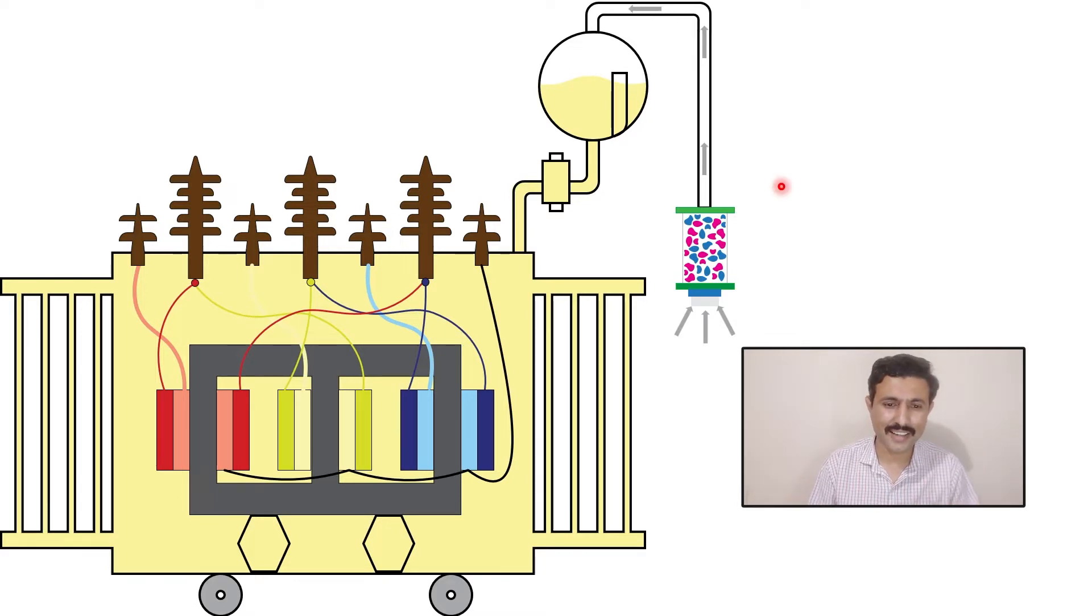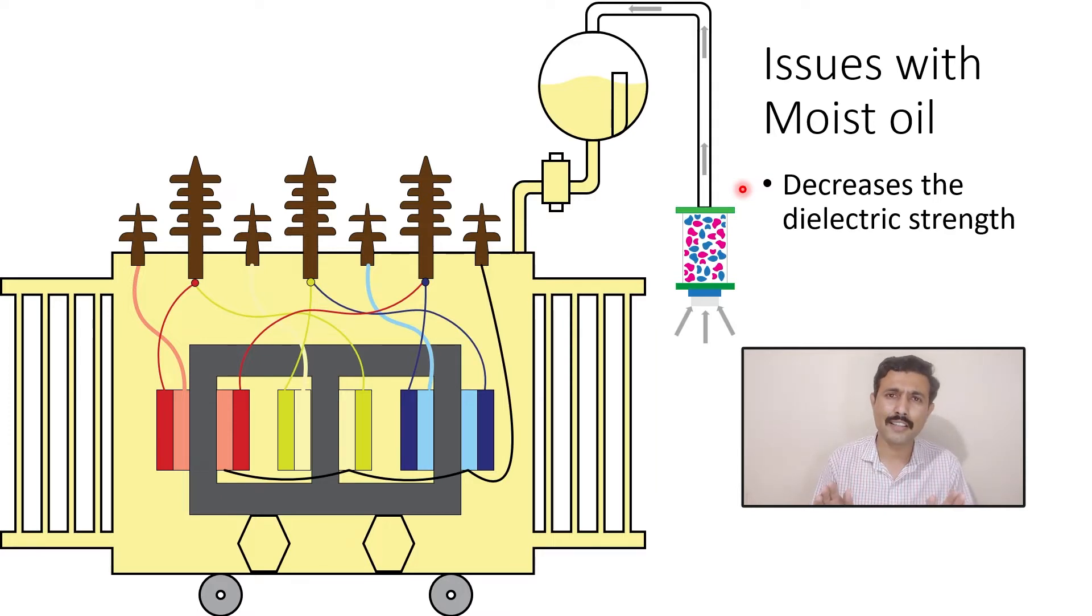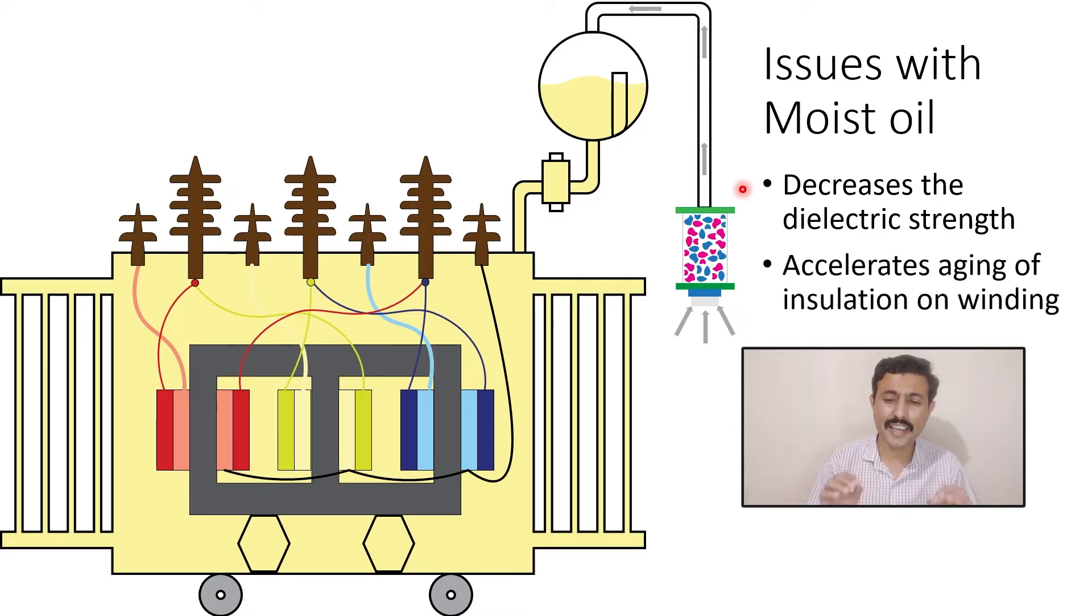When that moistured air mixes with the oil, it will create issues. When moisture in the air mixes with the oil, it decreases the dielectric strength of the oil. If the dielectric strength of the oil reduces, it creates lots of issues for transformer. The other problem is it accelerates the aging of insulation on the winding.